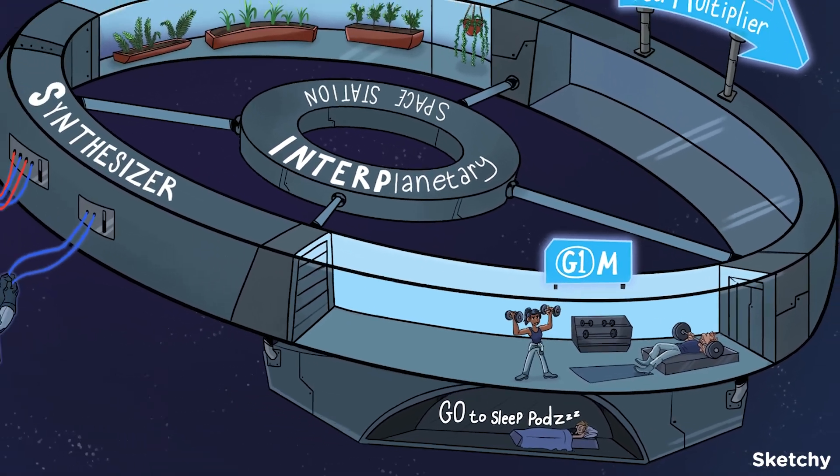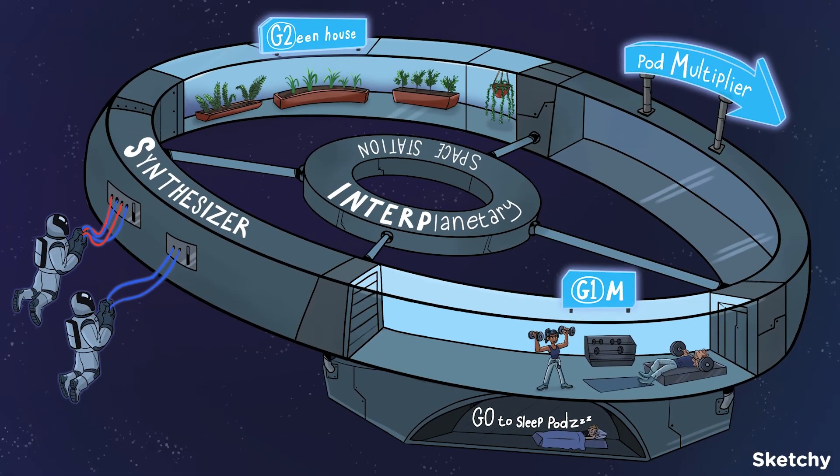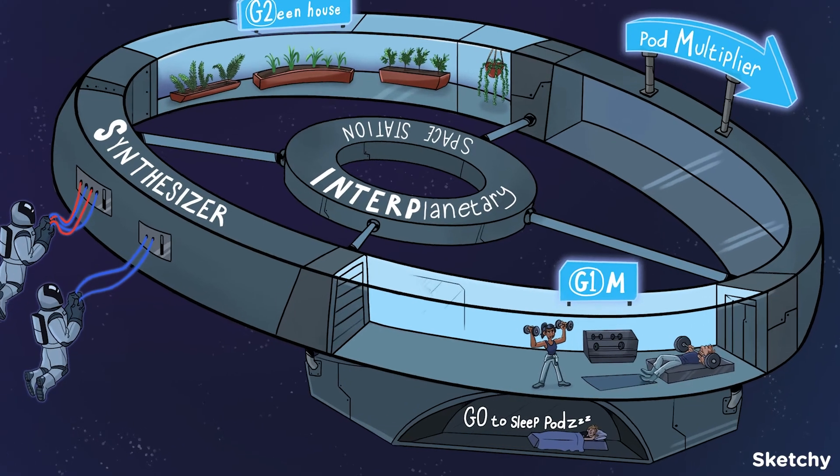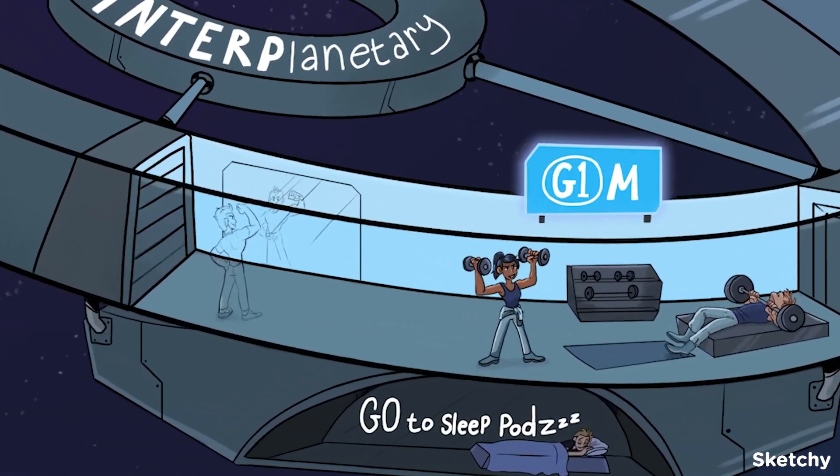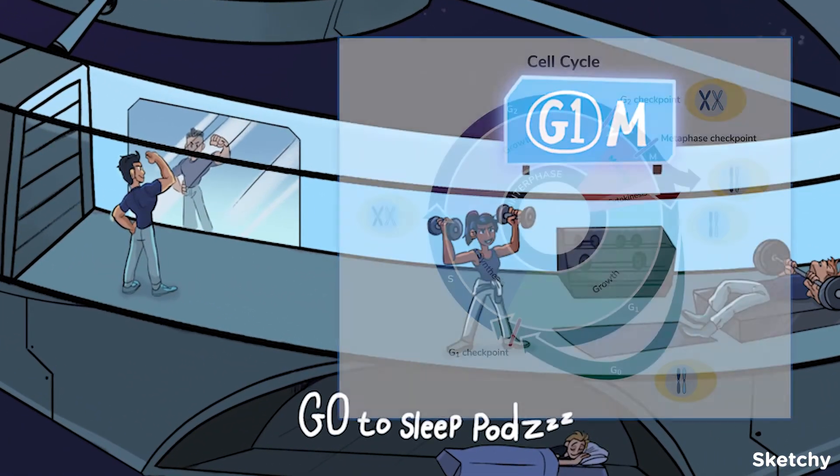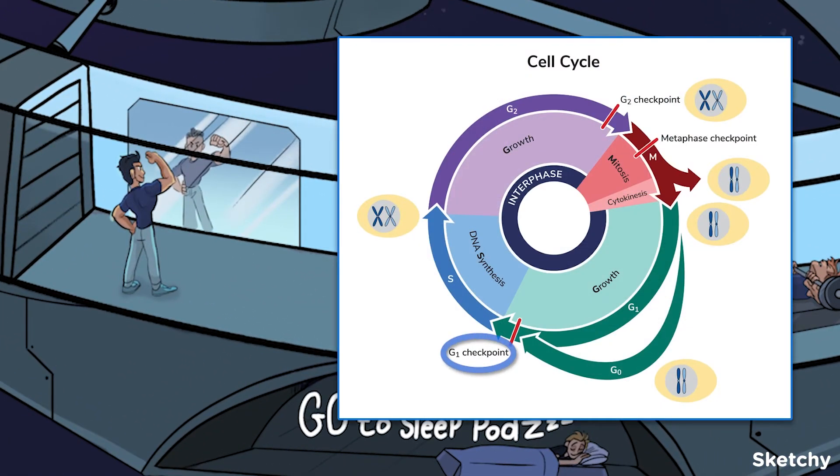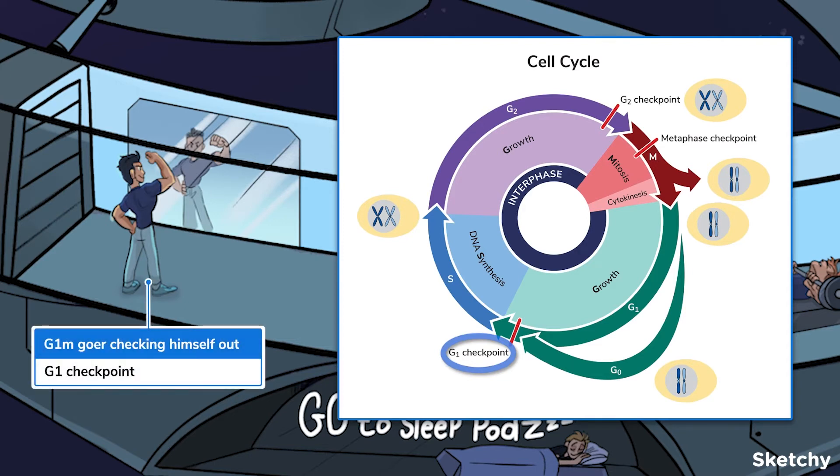Okay, let's change gears and talk about cell cycle regulation. There are three important checkpoints in a cell's life: G1, G2, and the metaphase checkpoint. The G1 checkpoint is present at the end of G1. The goal is making sure the cell has grown enough in size and has all the necessary components for DNA synthesis. And here's Billy showing off the guns. Dang Billy, stop hogging the mirror!